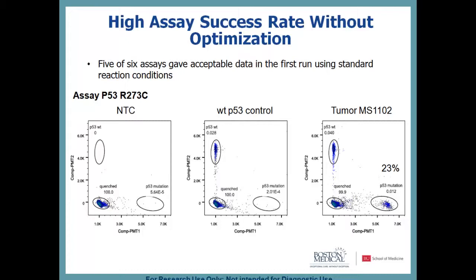Five of the six assays from IDT actually gave acceptable data in the first run using just standard conditions provided by RainDance. Here is the P53 assay: on the left is the no-template control — reasonably clean with a little spray on the x-axis. The middle panel shows the wild-type P53 control with a nice positive cluster and relatively clean separation. On the right is the tumor sample, which had a 23% minor allele frequency.